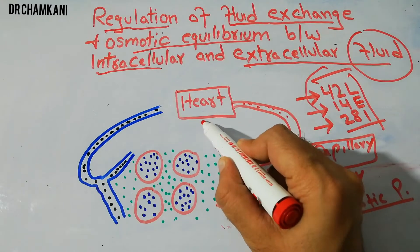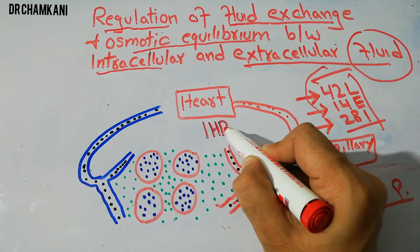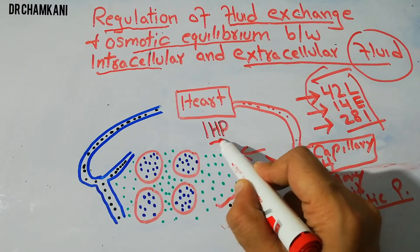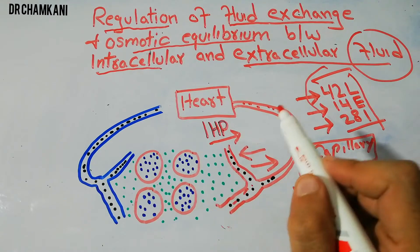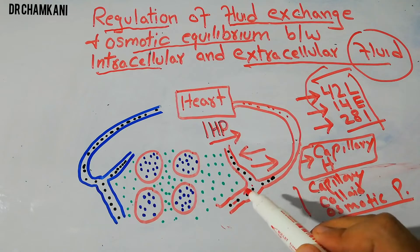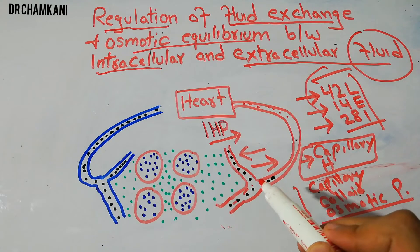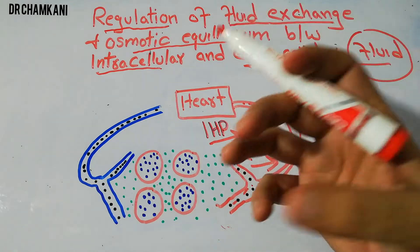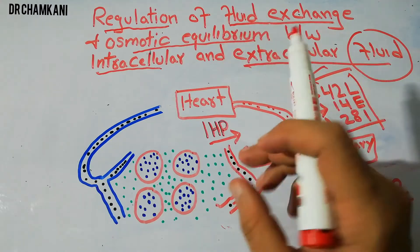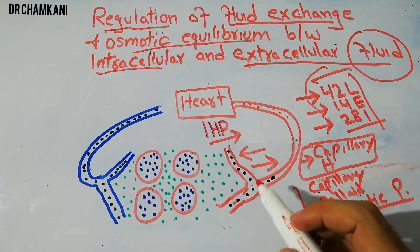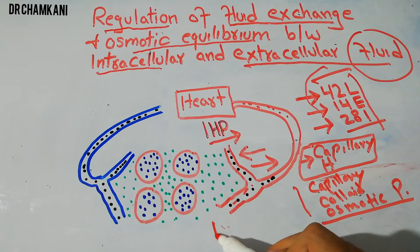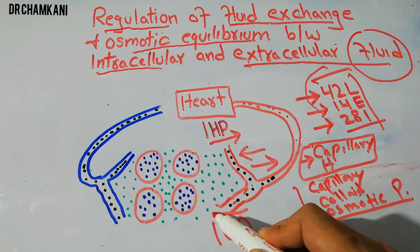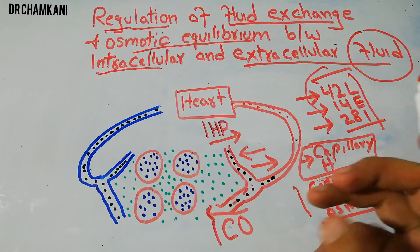In the interstitial fluid, there is the interstitial fluid hydrostatic pressure, which is present due to the movement of fluid molecules and is basically pushing the fluid towards the capillary — pushing molecules inside the capillary. Another pressure in the interstitial fluid is the interstitial fluid colloid osmotic pressure, which is basically trying to pull the fluid into the interstitium — pulling water or fluid molecules into the interstitium.